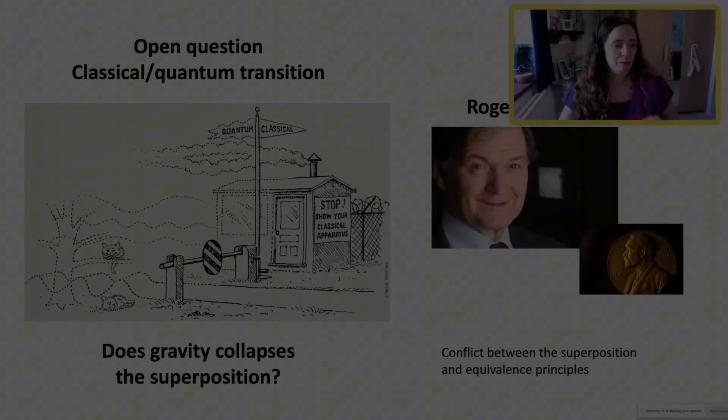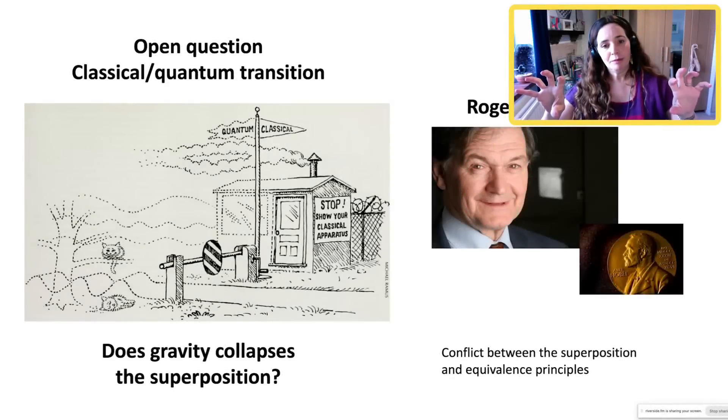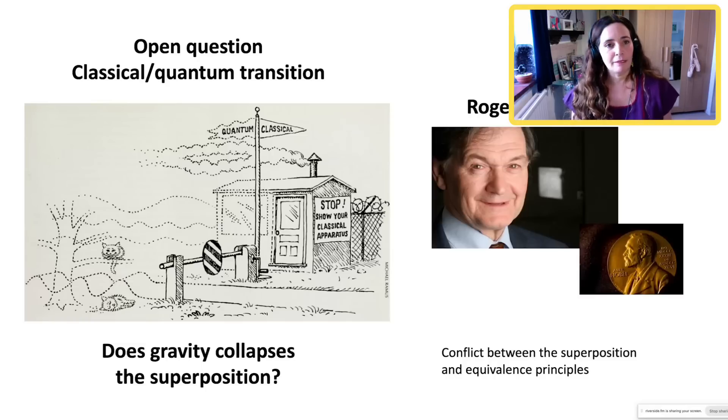Roger proposed many years ago that if you have a massive superposition, this is unstable. And he argued that by showing that there was a conflict between the superposition principle and the equivalence principle.